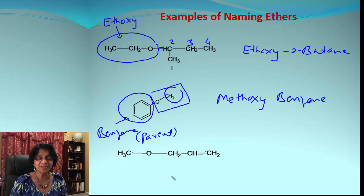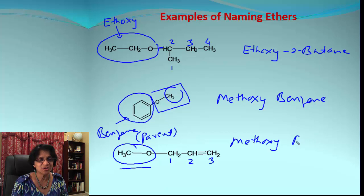How about this one? Does it look complicated? Yes, kind of. Let's figure it out. That's the smaller group, so that will be methoxy. And now over here, the parent chain has three carbon atoms, so it should be propane. But what do we have? We actually have one double bond, so we can say prop-2-ene.